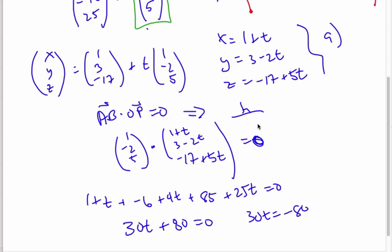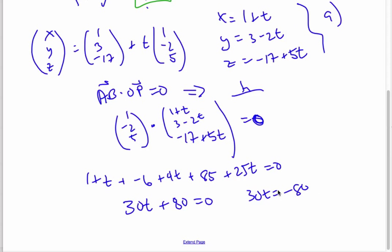Oh, let me check my arithmetic here. Negative 85. Oh, thank you. So this will be negative 85.